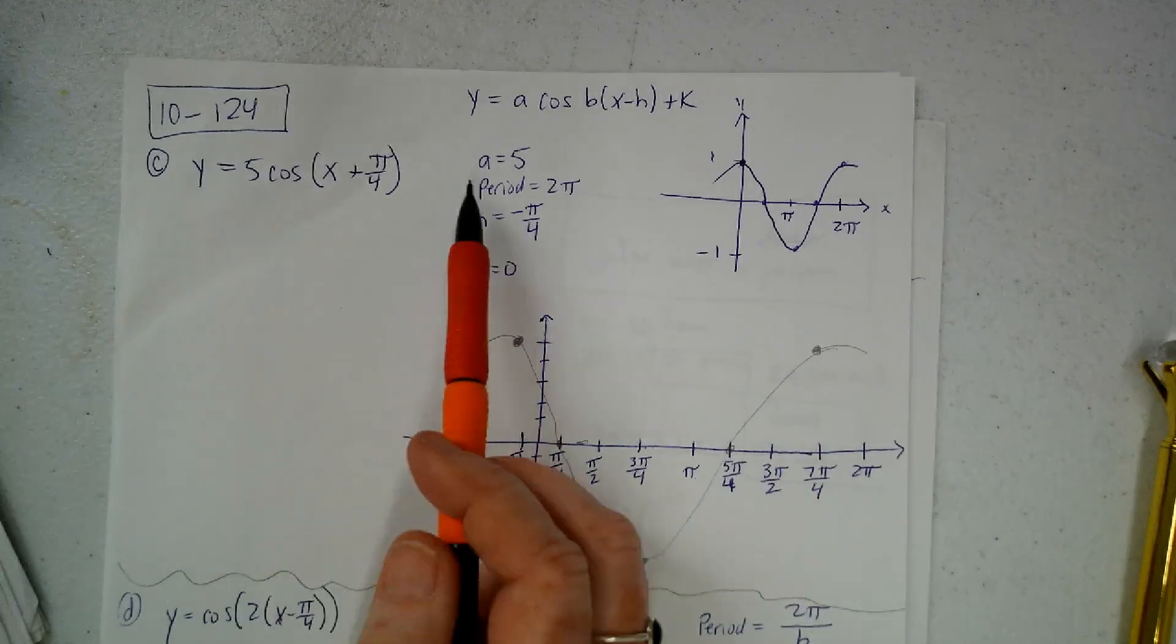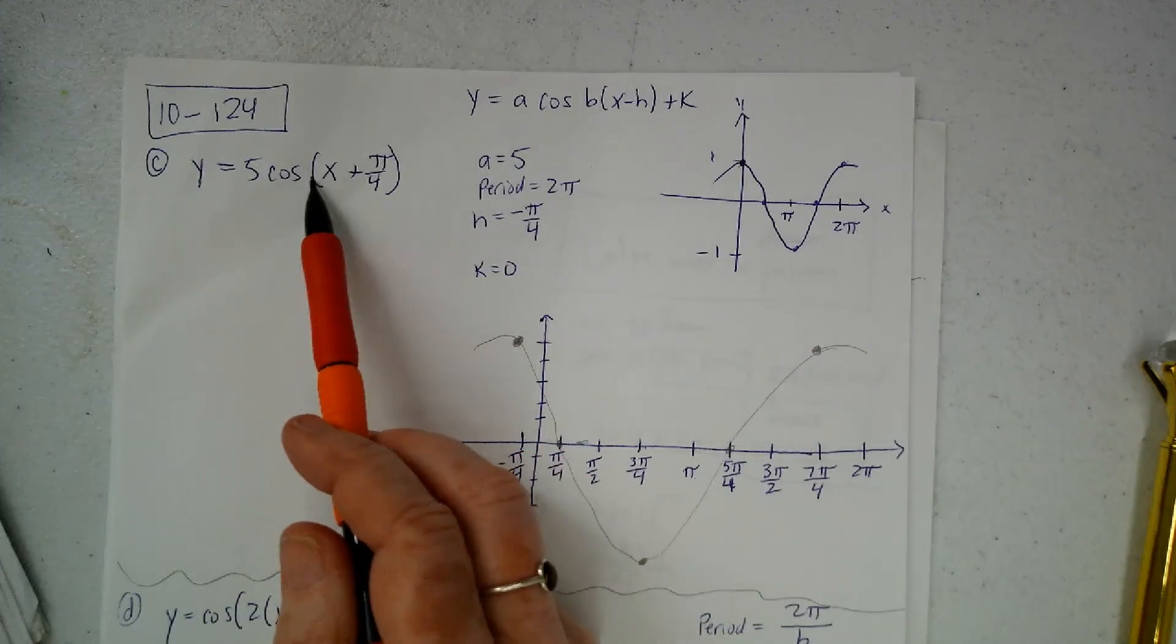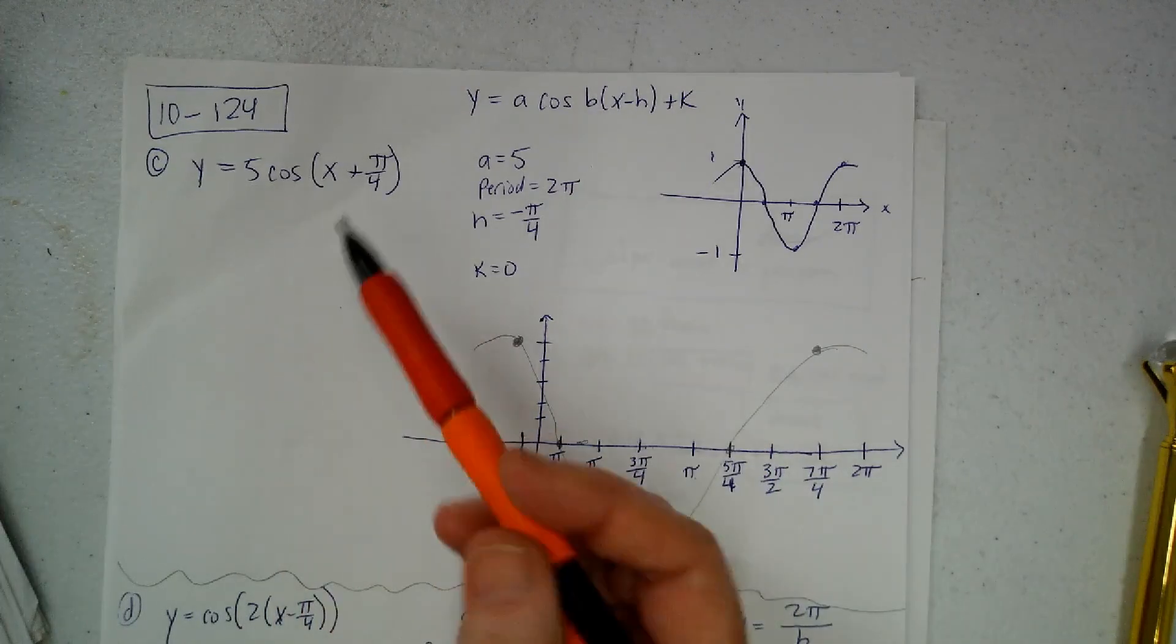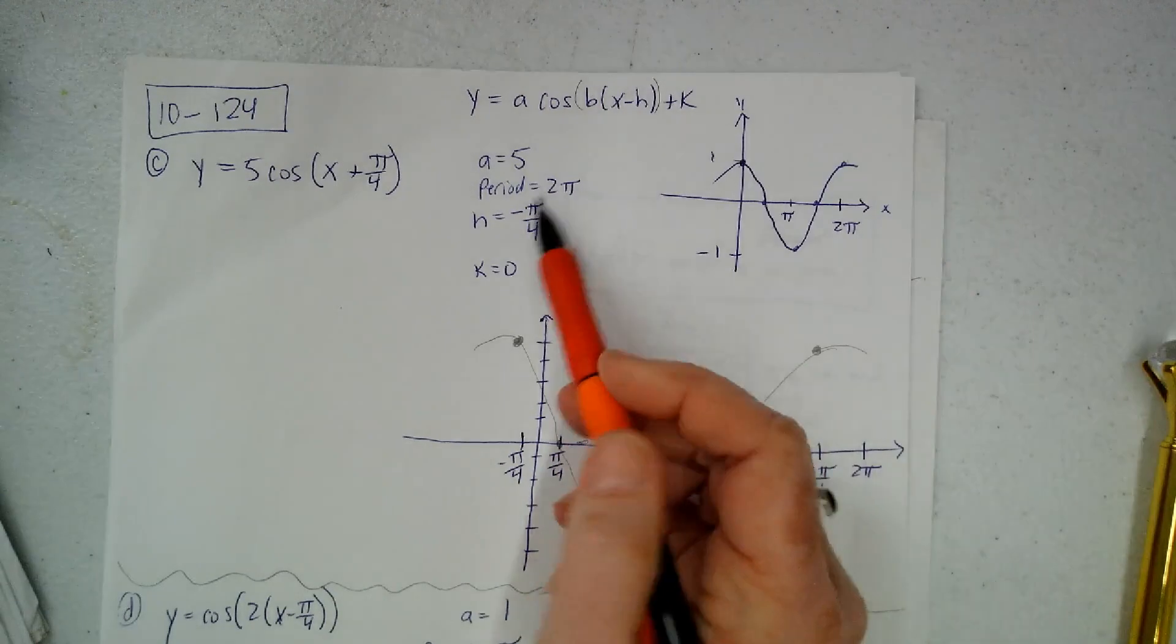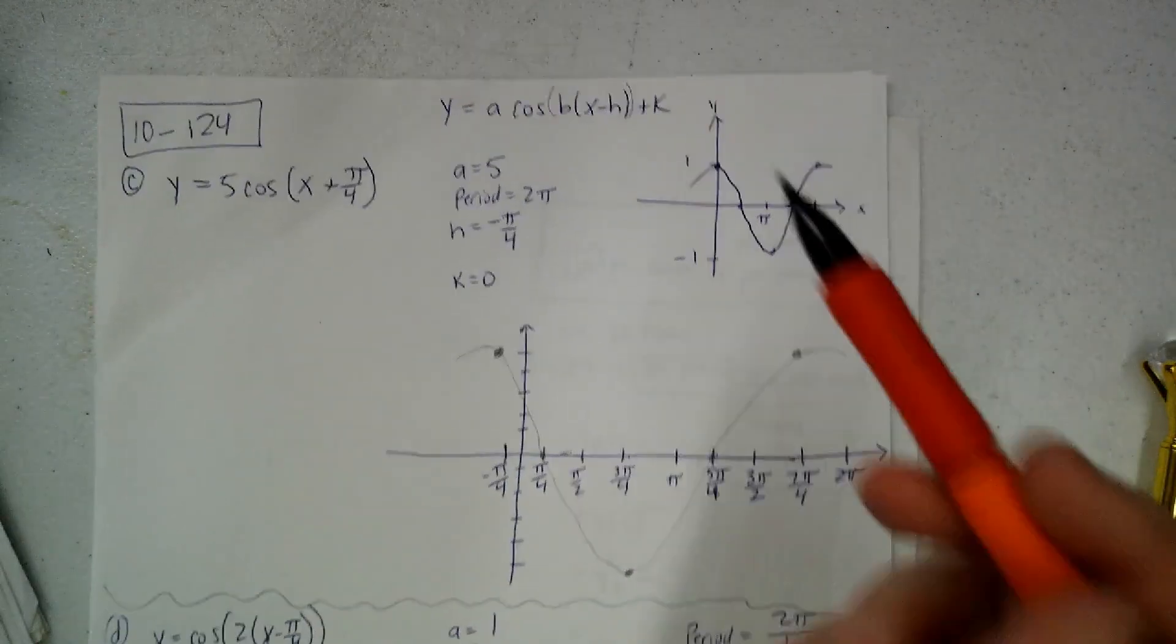The period is given by B. But when I look in the position where B is, B is supposed to be over here somewhere. But I don't see a B. So that means that the period is just, that means B is 1, which means the period is just 2π.